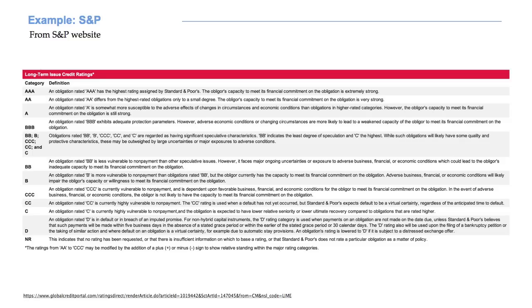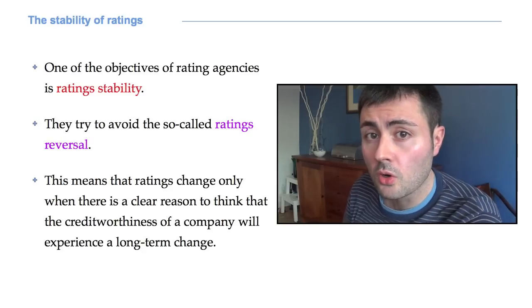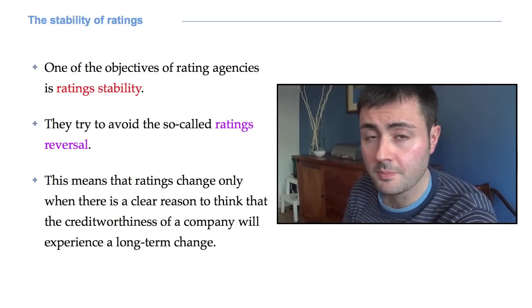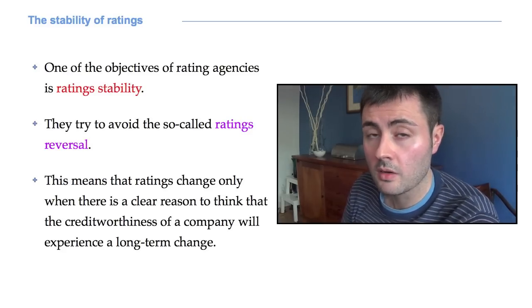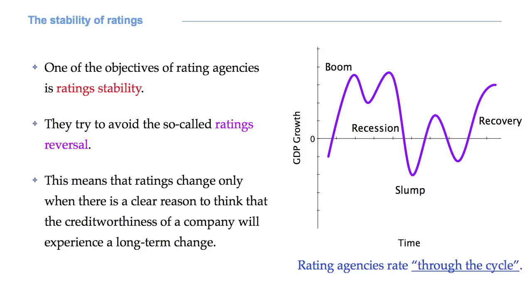Here you can see an example of a rating scale by Standard & Poor's. I suggest you have a look at the websites of the different agencies, since you can find a lot of interesting information. One of the goals of rating agencies is ratings stability. A rating agency always tries to avoid the so-called ratings reversal, where a company's bonds are downgraded and then upgraded again, or vice versa, a few weeks later. This means that ratings change only when there is a clear reason to think that the creditworthiness of a company will experience a long-term change. In other words, rating agencies try to rate through the cycle, ignoring the contingent situation of the economy, unless there are strong signals of significant impact on the survivorship of a given company.